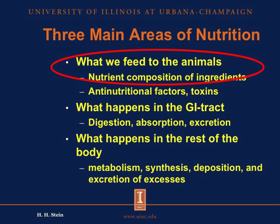Those are all related to the feed ingredients that we use. The second area of nutrition is what happens to these feed ingredients when they are ingested by the animal and get into the GI tract — here we talk about digestion, absorption, and excretion of nutrients. The third part of nutrition is what happens in the rest of the body after the nutrients have been absorbed: they are metabolized, new compounds are synthesized, compounds are deposited, and if there are any excesses, they will be excreted. Today I will talk only about the first area.